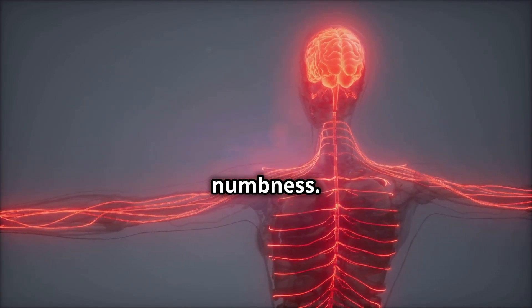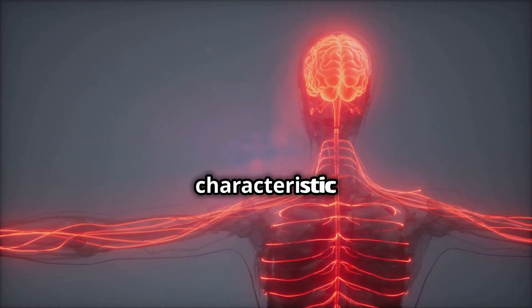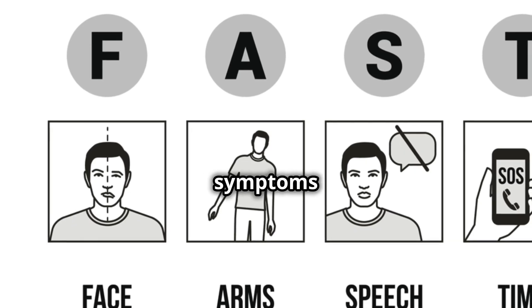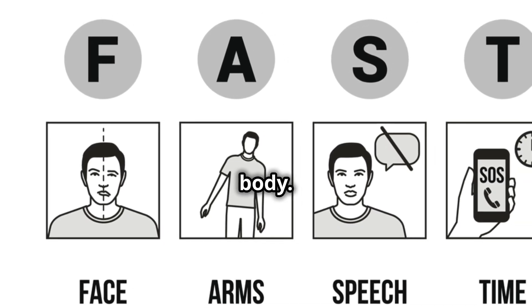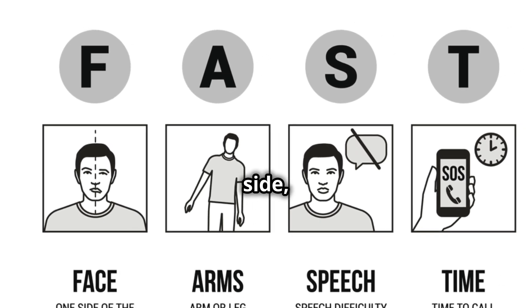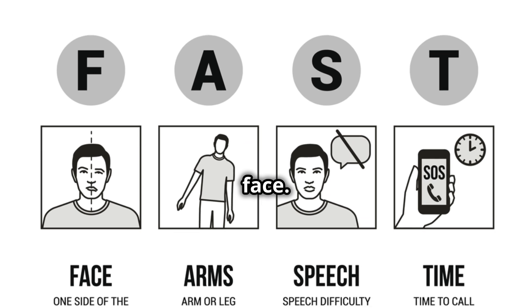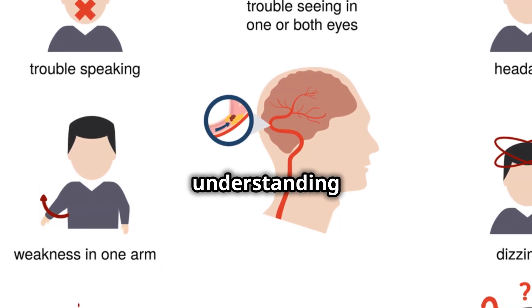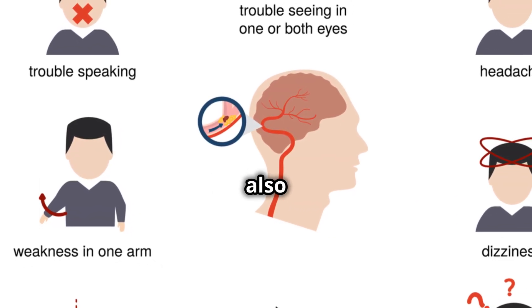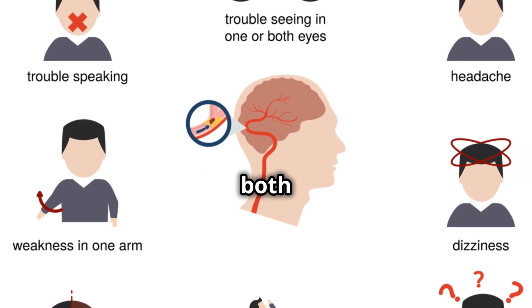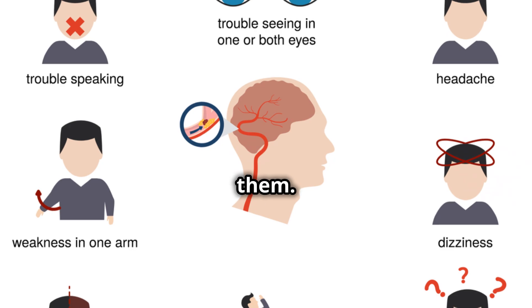It is essential to recognize the signs immediately. Stroke symptoms usually affect one side of the body — for instance, a person might experience weakness in their arm or leg on one side, or even a drooping face. Sudden confusion, trouble speaking, difficulty understanding speech, and vision problems can also occur. These symptoms can be frightening and disorienting for both the patient and those around them.